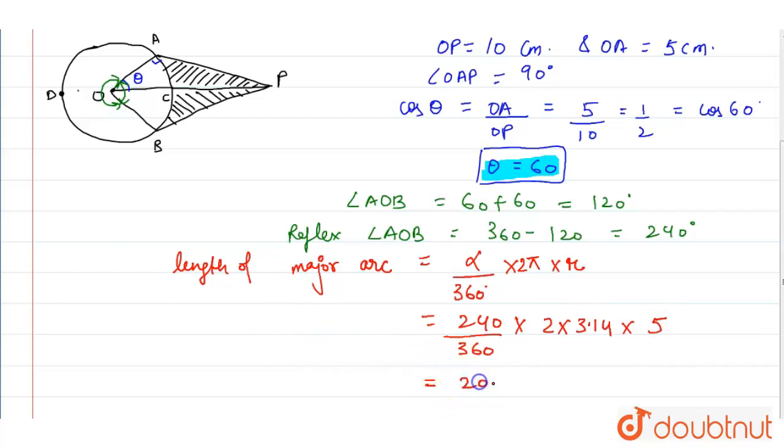Now in this triangle OAP, we have the side OP and we have the value of theta, so we can calculate the value of AP with the help of applying the sine theta.